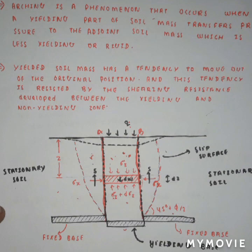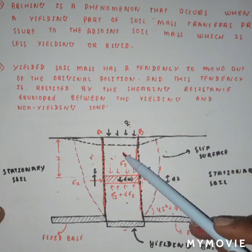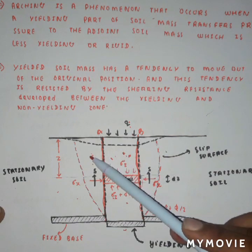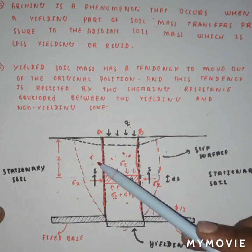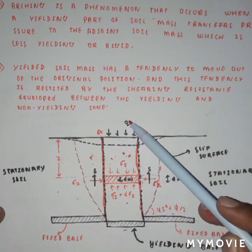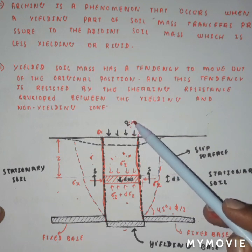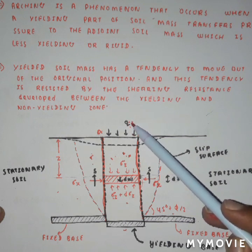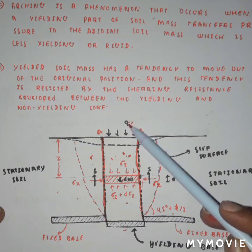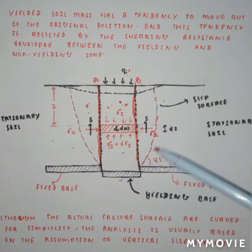Now let us understand arching of soil. Arching of soil is the phenomenon in which a moving or yielding soil mass will transfer its pressure to the comparatively non-yielding or non-moving soil mass. In portion AB of the soil mass, a constant stress q is acting, and due to this constant stress, deformation is caused, which is known as yielding.